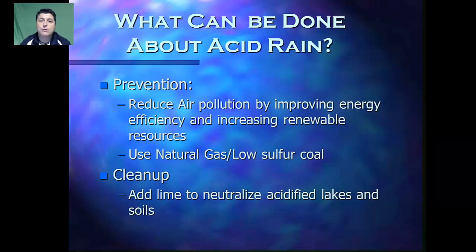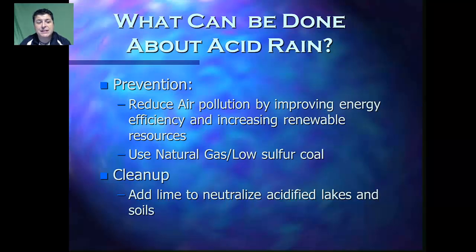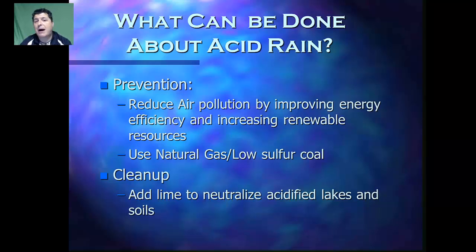Today we have two major options: prevention and cleanup. To prevent the formation of acid deposition, we can reduce air pollution by improving energy efficiency and increasing our use of renewable resources. If we're going to use carbon-containing fuels, we could use things like natural gas or low-sulfur coal to reduce the particulates that contribute to acid deposition. For cleanup, certain environments that are already acidified can be mitigated by using limestone to neutralize acidified lakes and soils to encourage better plant growth.